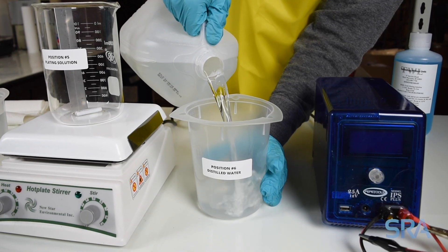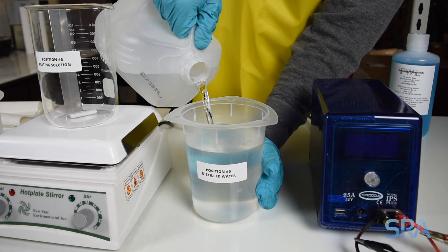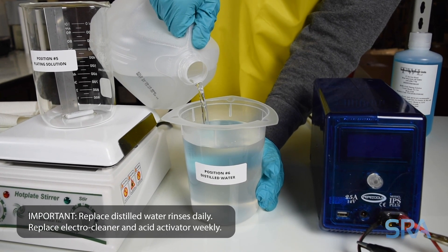In between each step you will want to set up rinse beakers. Fill each beaker with one liter of distilled water. The more rinses the better to avoid contamination.